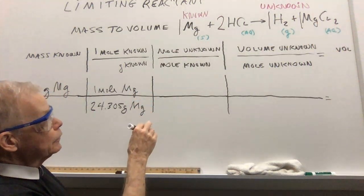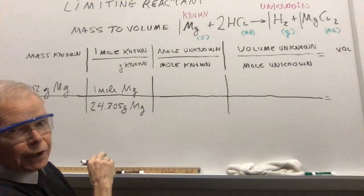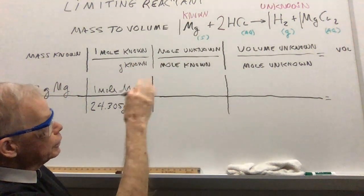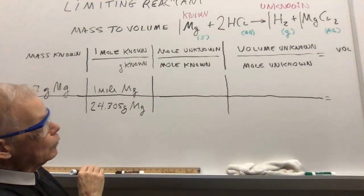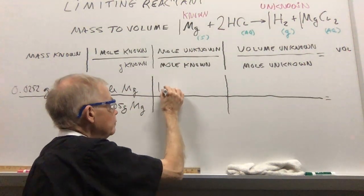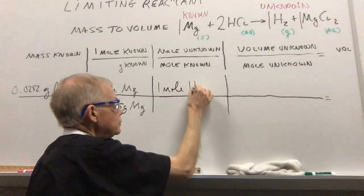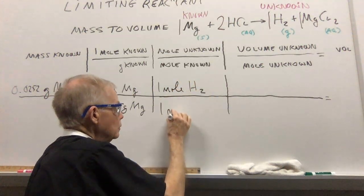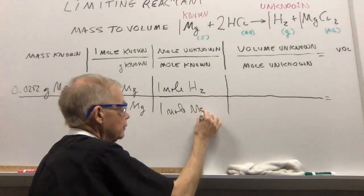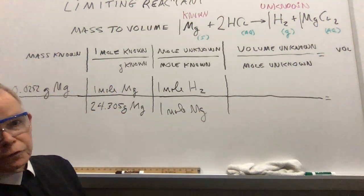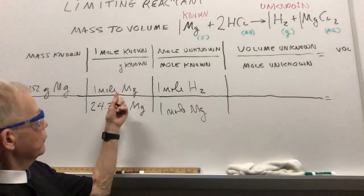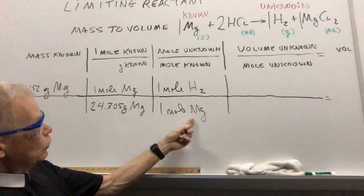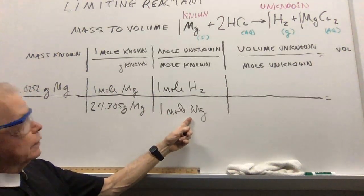My unknown is my hydrogen. And when I look at my chemical reaction up top there, I find the ratio for the moles is one mole of hydrogen gas for one mole of magnesium metal. My mole ratio is one to one. And I've got mole of magnesium here, mole of magnesium down here. They'll cancel. That's nice.